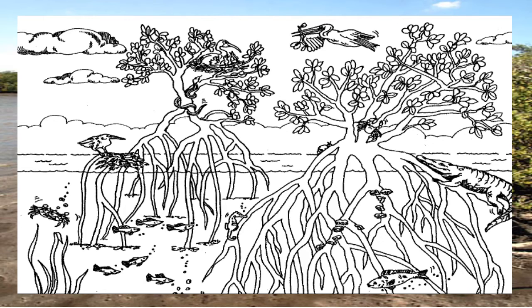Here is a diagram of a red mangrove habitat, where you will see the animals are under the prop roots.